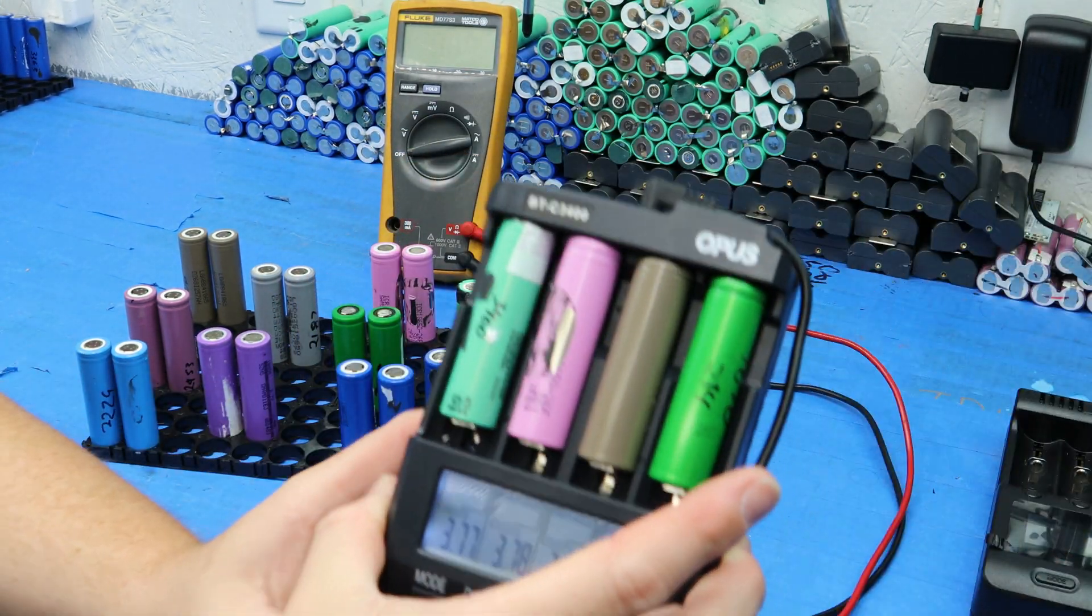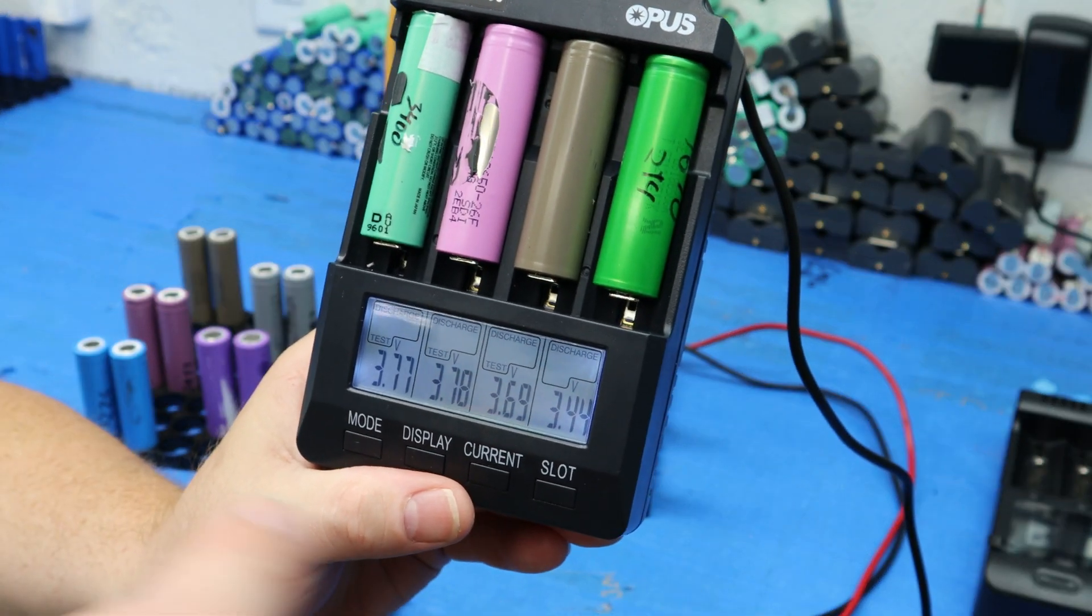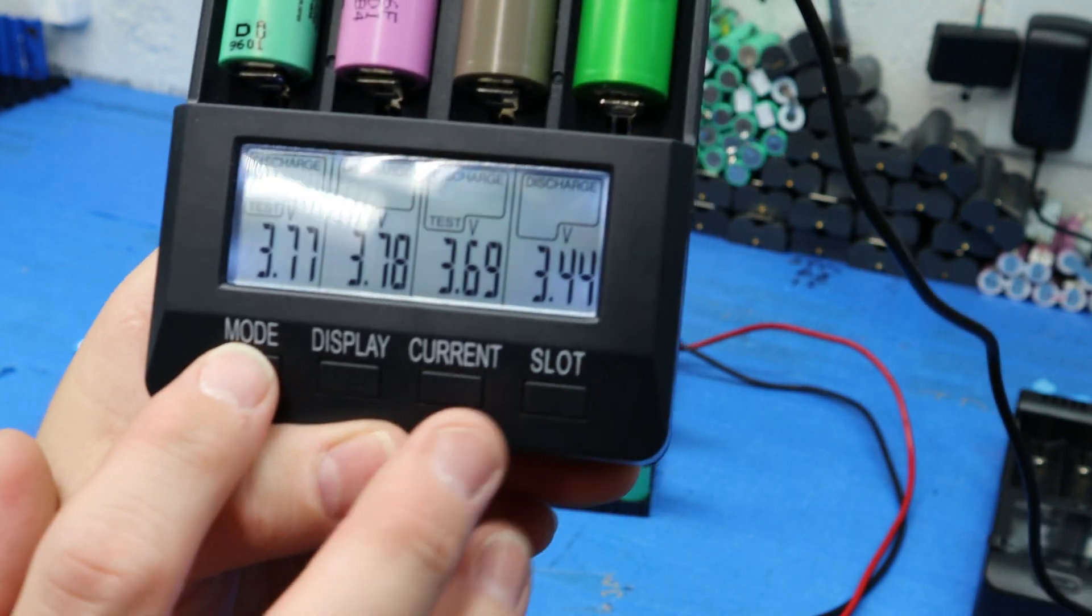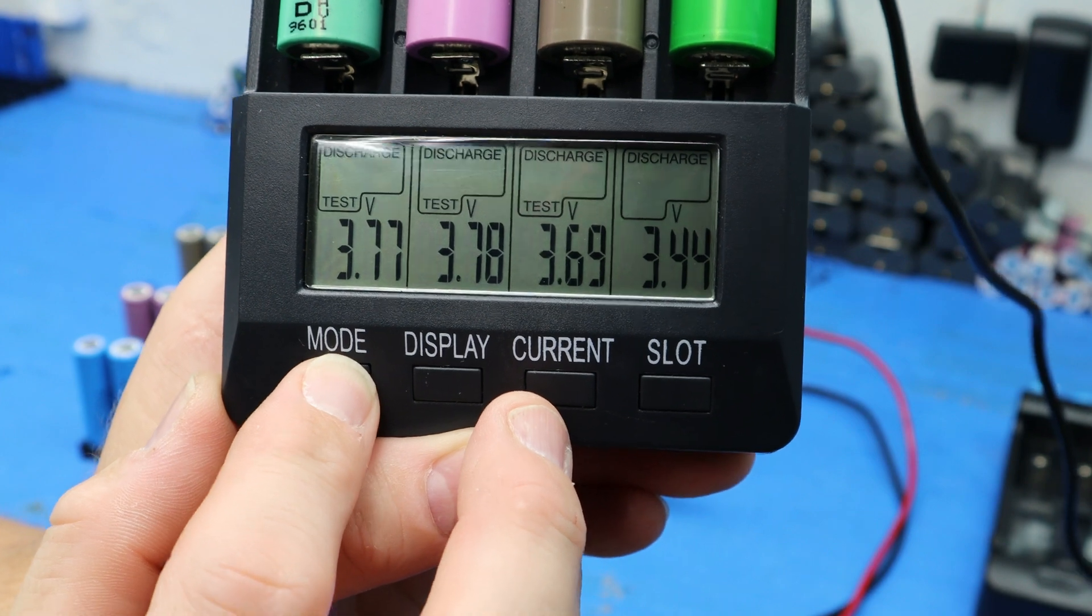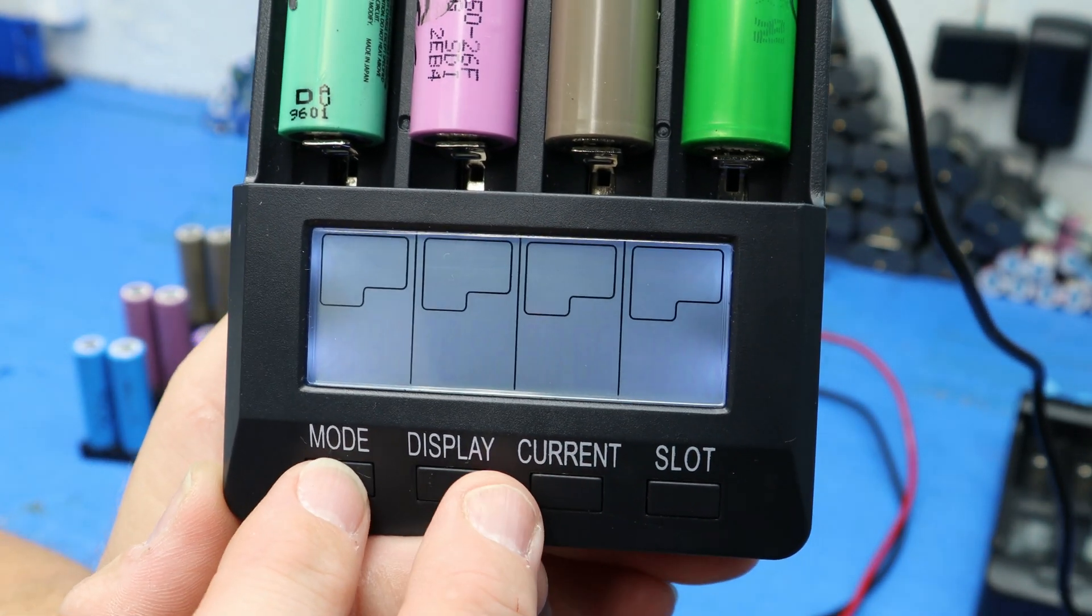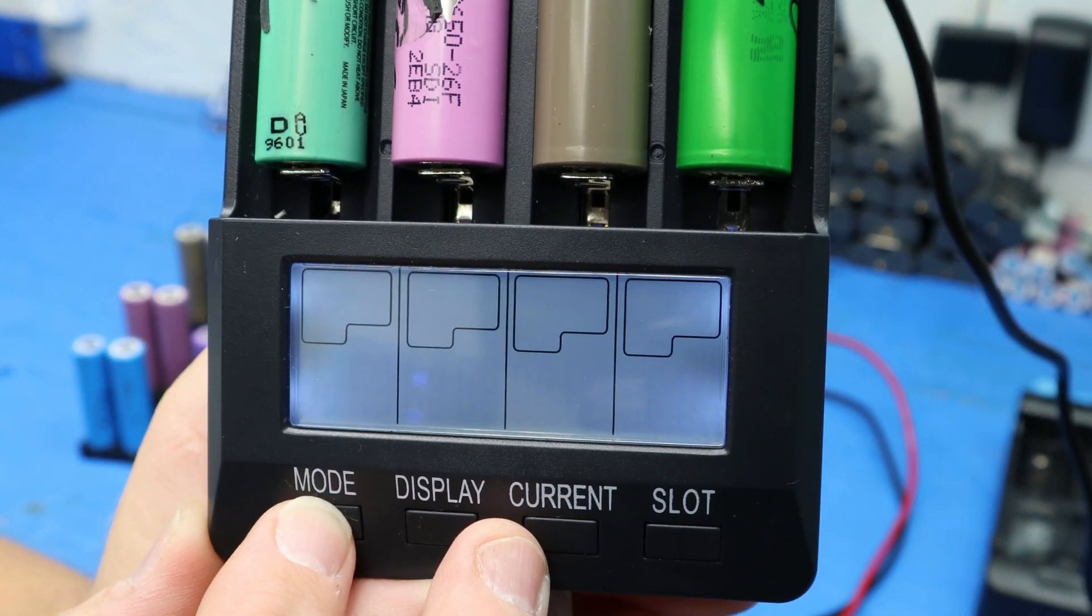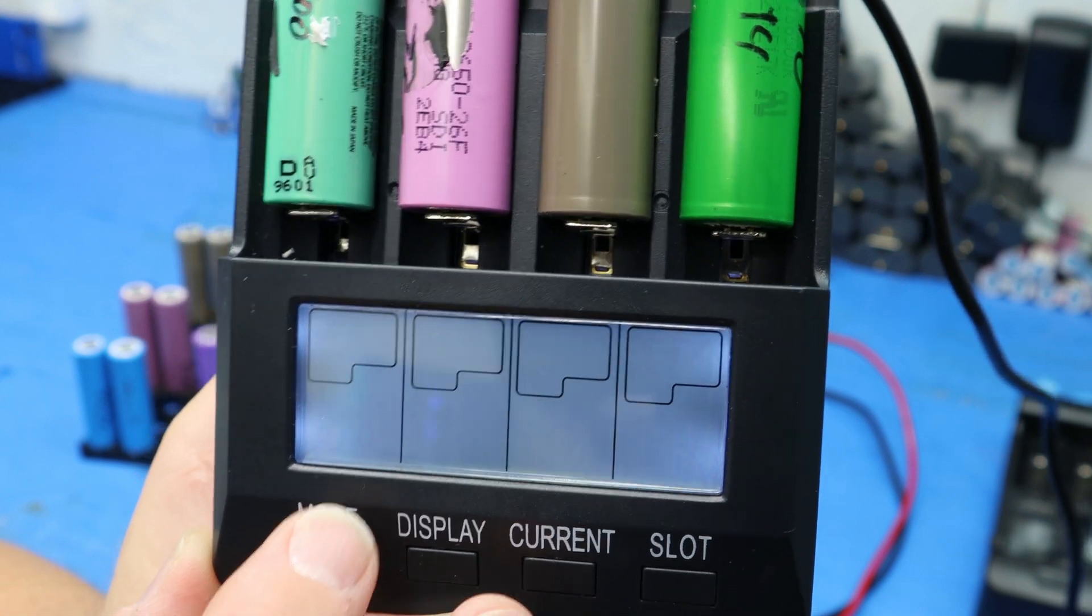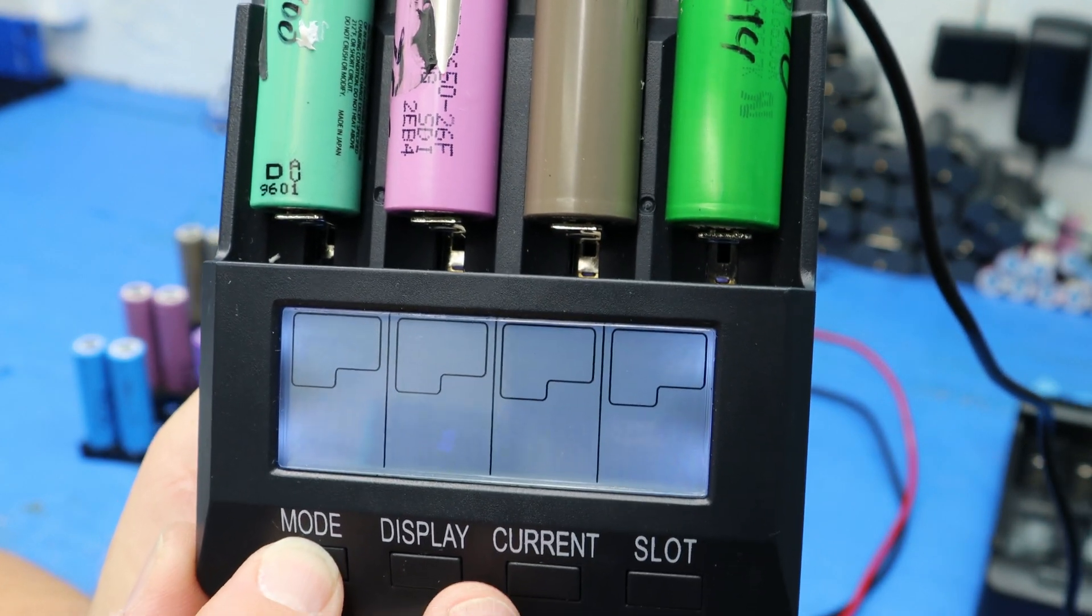Now the discharge rate and the discharge process for the Opus. Let's show you what options you have up here. We can go and hold mode down. It'll flash and we'll go through it. You have charge, you have discharge.